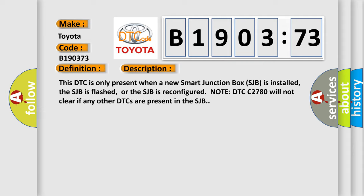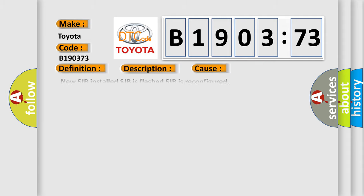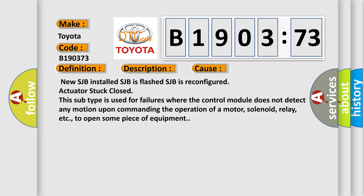This diagnostic error occurs most often in these cases: New SJB installed, SJB is flashed, SJB is reconfigured. Actuator stuck closed. This subtype is used for failures where the control module does not detect any motion upon commanding the operation of a motor, solenoid, relay, etc., to open some piece of equipment.